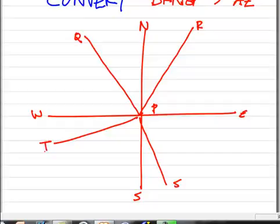If they're bearings, those bearings are going to go from here and here, starting at north, going to the east or west. Starting here at south and going to the east or going to the west.